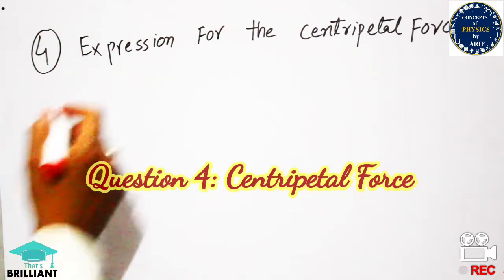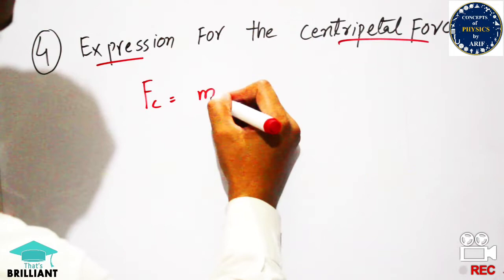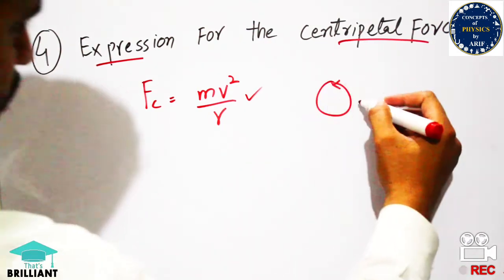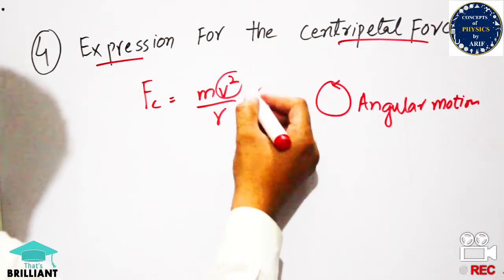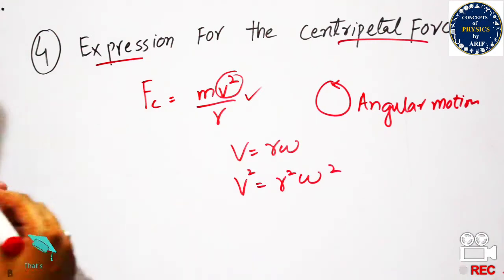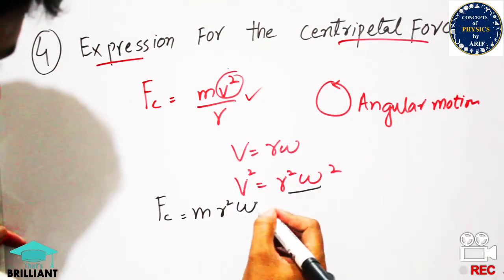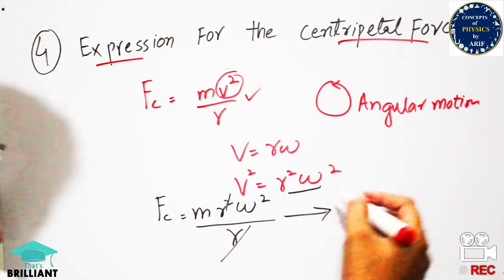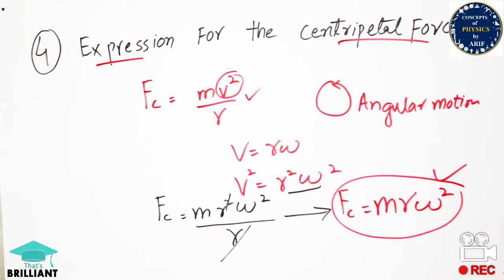The next question asks for the expression for centripetal force. We know Fc = mv²/r. Since we also deal with angular motion, we can convert using v = rω, so v² = r²ω². Substituting: Fc = m·r²ω²/r. The r cancels by one, giving the final expression Fc = mrω². You can use this answer in entry tests and board exams.